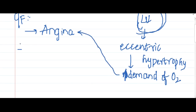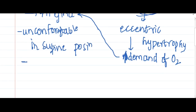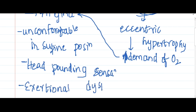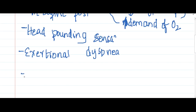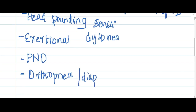These patients are uncomfortable in the supine position. There is a head pounding sensation, and they slowly develop exertional dyspnea. Breathlessness occurring in the supine position after a few minutes is called paroxysmal nocturnal dyspnea, and if it occurs immediately in the supine position it is called orthopnea. There can also be increased sweating called diaphoresis.